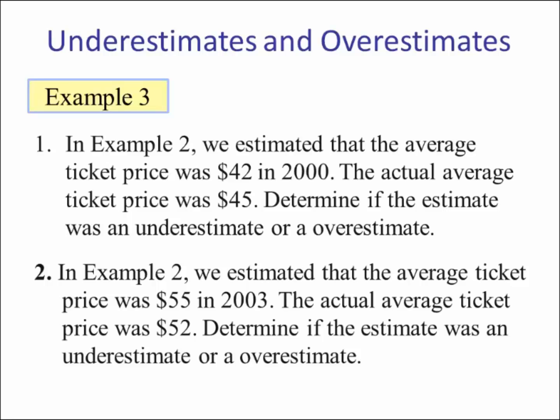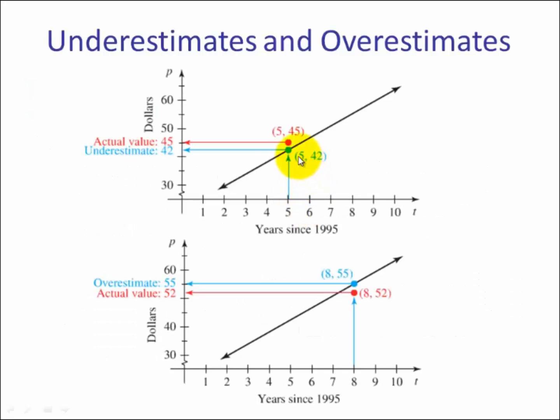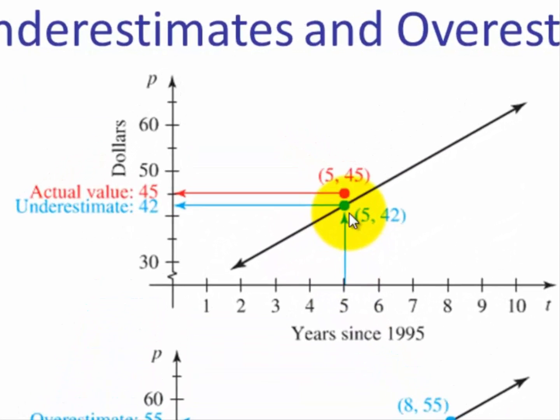Let's look at a visual. So according to the model, when t is 5, the model states that p is 42. The actual value was 45. In this case, this was an underestimate. The actual data point is above the line.